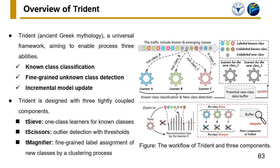Specifically, we propose Trident, a universal framework named to enable three abilities: known class classification, fine-grained unknown class detection, and incremental model update. Trident is designed with three tightly-coupled components: sieve, scissors, and magnifier.